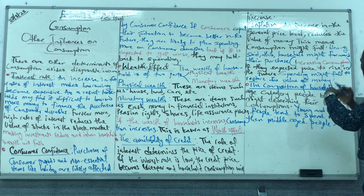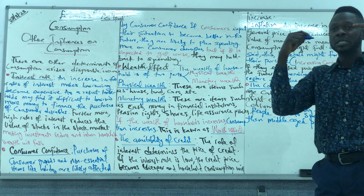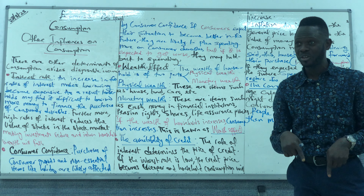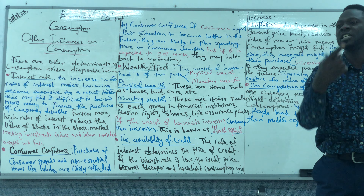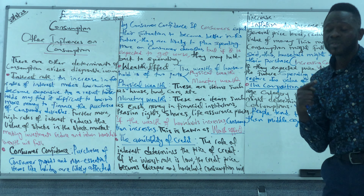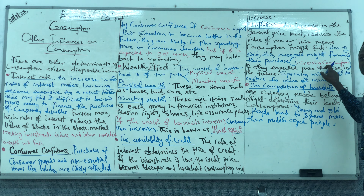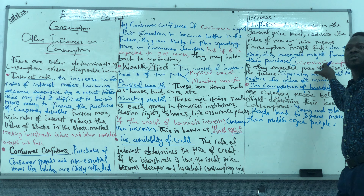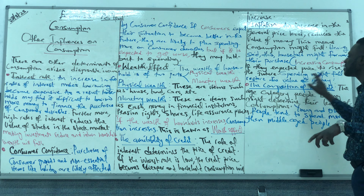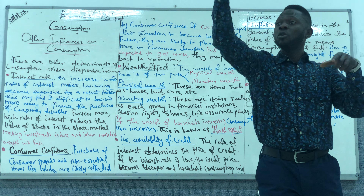However, households might forward their purchases, increasing consumption now. If you are expecting the prices of goods and services to increase in the future, you might want to buy them now. That is called forward purchasing — you bring forward purchases because you expect prices to be higher in the future. So consumption increases right now because you think prices will rise. But if they expect prices to rise, spending in the future might fall, preserving the value of money.